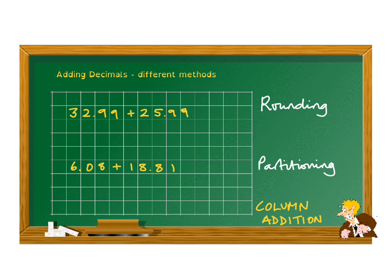We can add up these two numbers if we round them. We're going to round them up, so 32.99 will round up to 33 pounds, and we can round up 25.99 to 26 pounds. That makes things a lot easier. But don't forget, you've got to take off what you've rounded up. We can add up 33 and 26 and that will make 59.